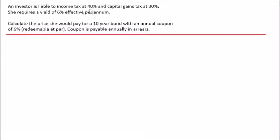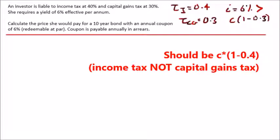In this example we have an investor liable to income tax at 40% and capital gains tax at 30%. Let's define the variables: let τ_i represent the income tax at 40% and τ_cg represent the capital gains tax at 30%. This investor requires a yield of 6% annually, which means the yield equals 6% and needs to be greater than the coupon rate under the effect of capital gains, which is 1 minus 0.3.